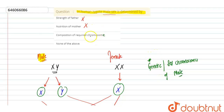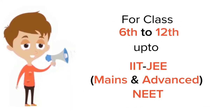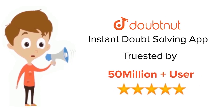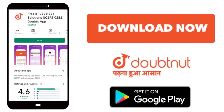Composition of required chromosomes — the only thing which determines sex is the composition of the sex chromosome, which determines the male sex. So option C is correct. None of the above is incorrect. Hope you get it. Thank you. For class 6 to 12, IIT JEE, and NEET level, trusted by more than five crore students — download the Doubtnut app.